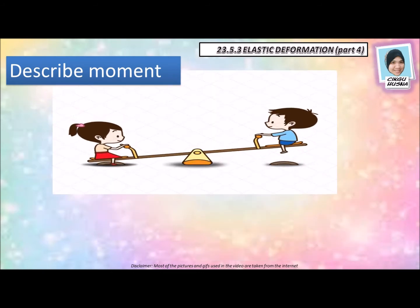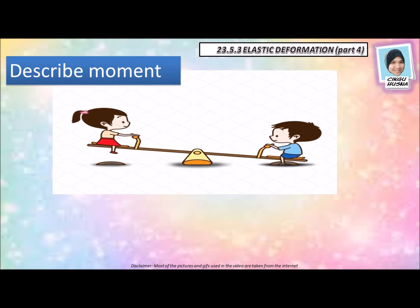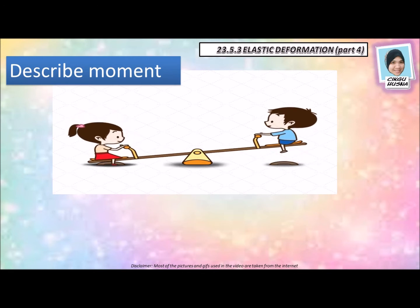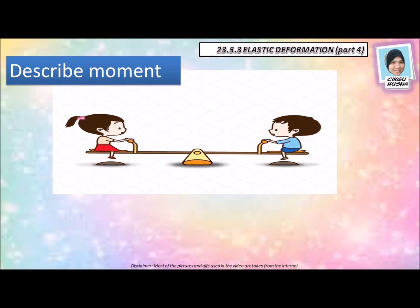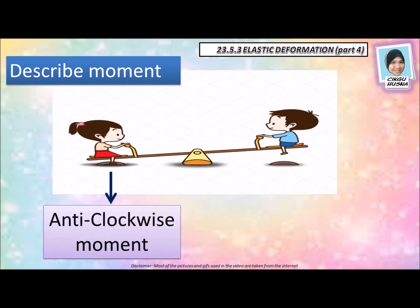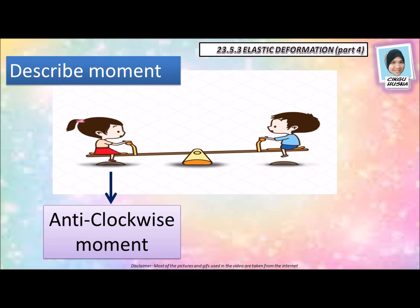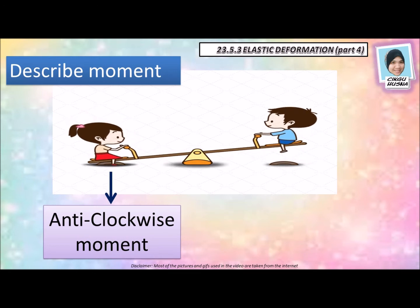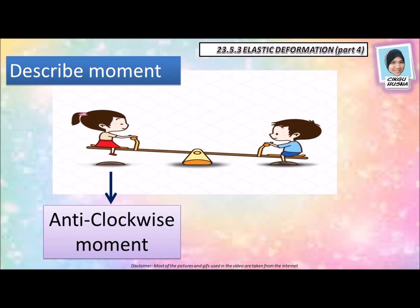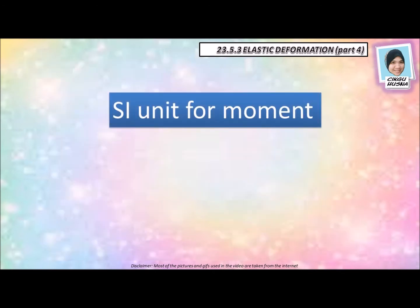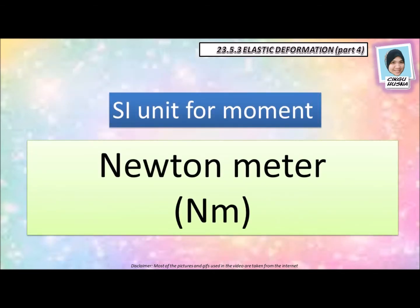Let's use another example. There are two kids playing on a seesaw. When the little girl goes down, she is having an anti-clockwise moment. Whereas for the boy in blue, when she goes down, he has a clockwise moment. The SI unit for moment is Newton meter, denoted by Nm.